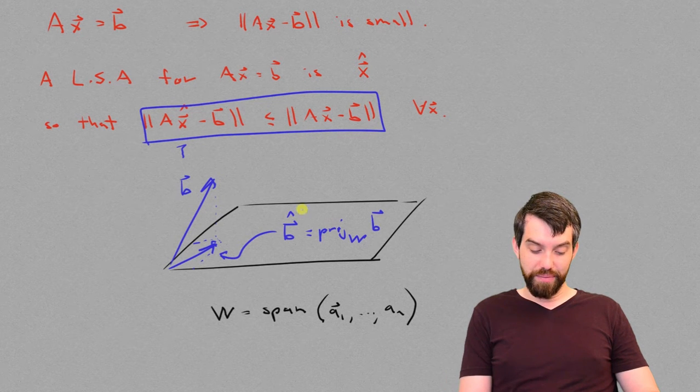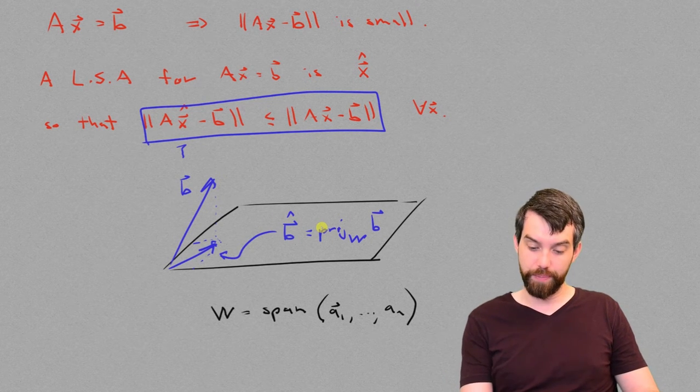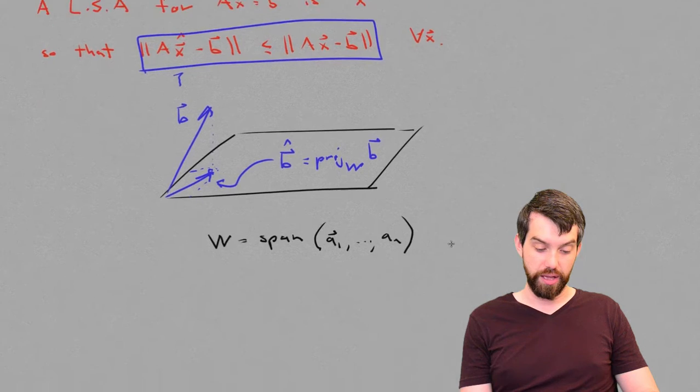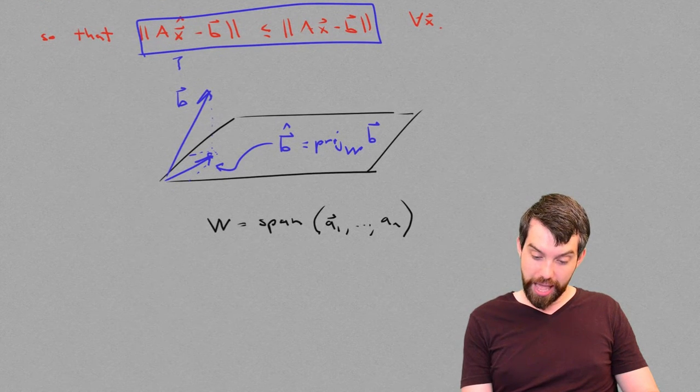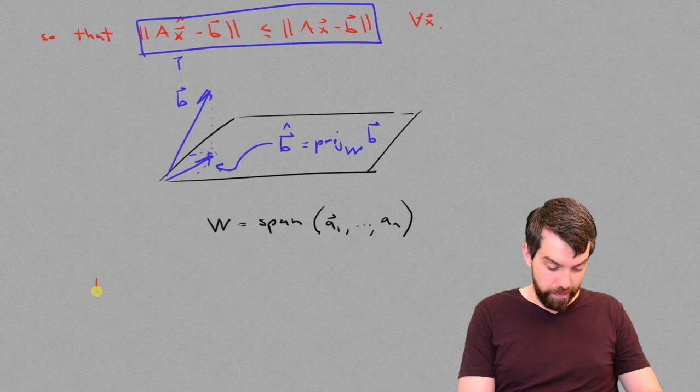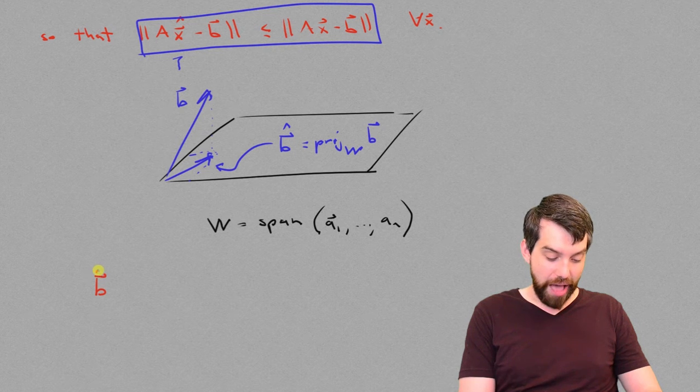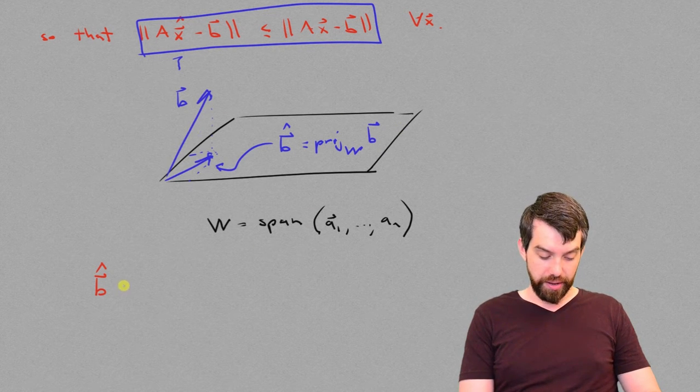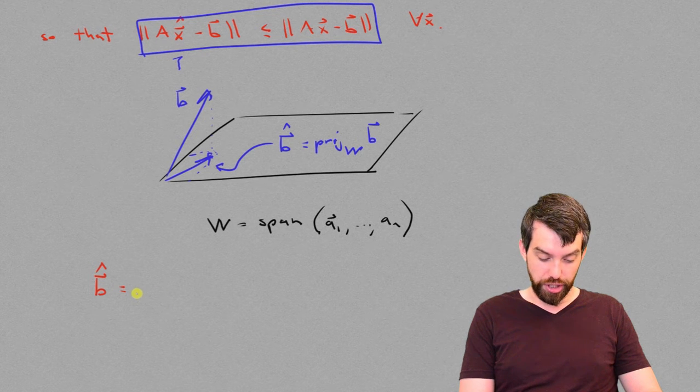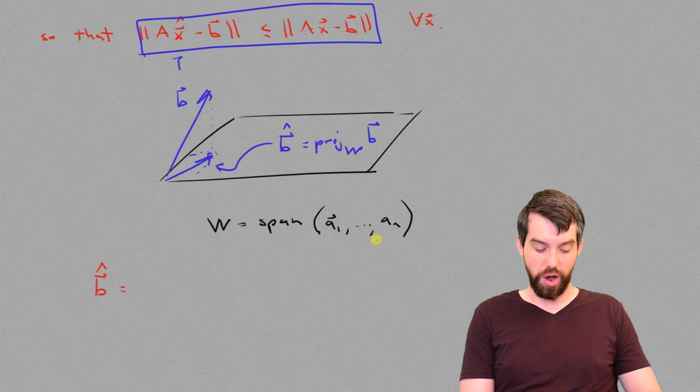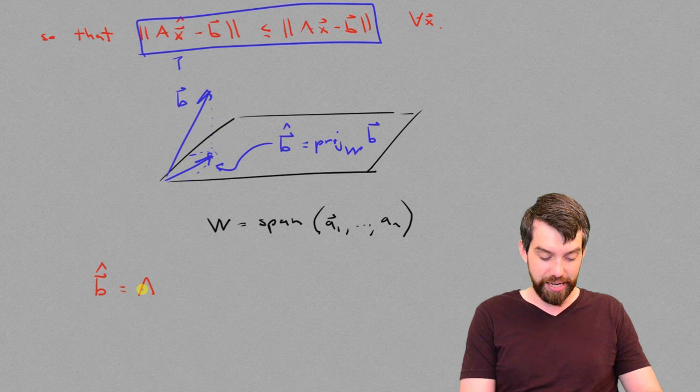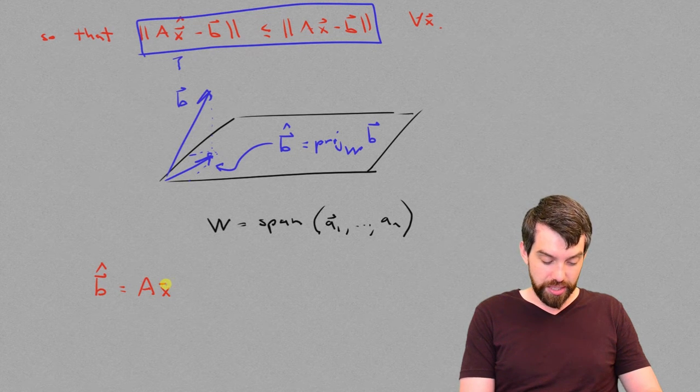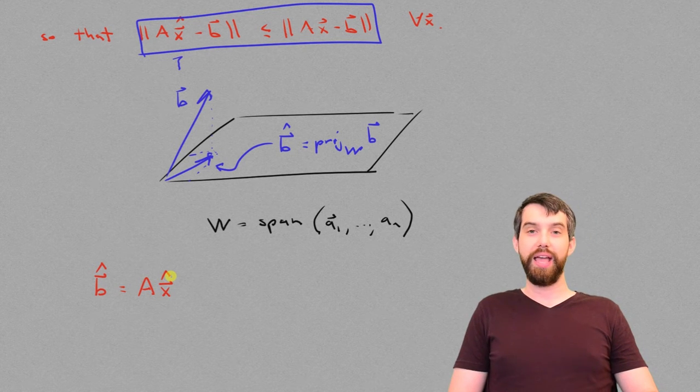So, then I've got some vector b hat, but it's in the span of the columns of a. So, in other words, what I can say is that this b vector hat, this vector that lives in this subspace, is just going to be equal to something in the span of the columns of a, which is another way of saying it's a times some vector x hat.